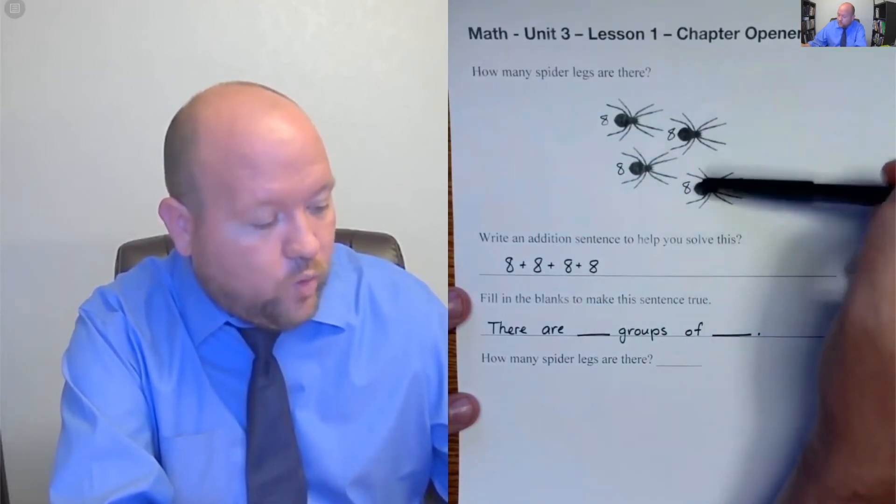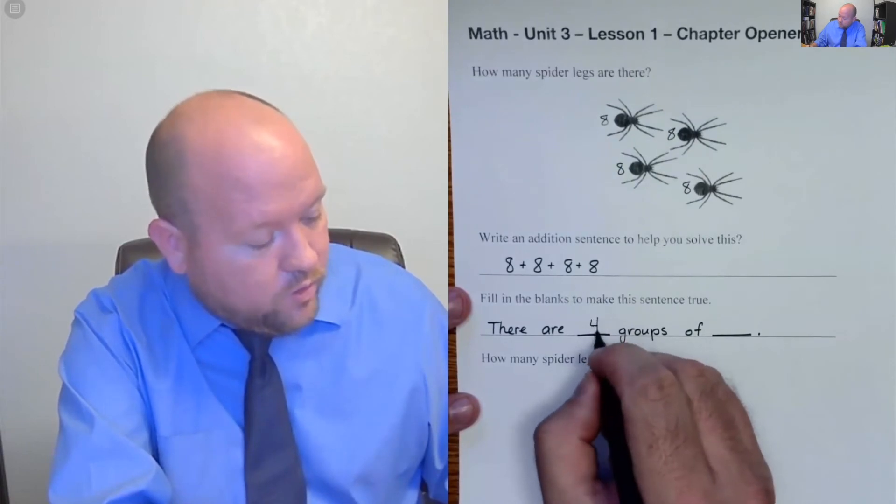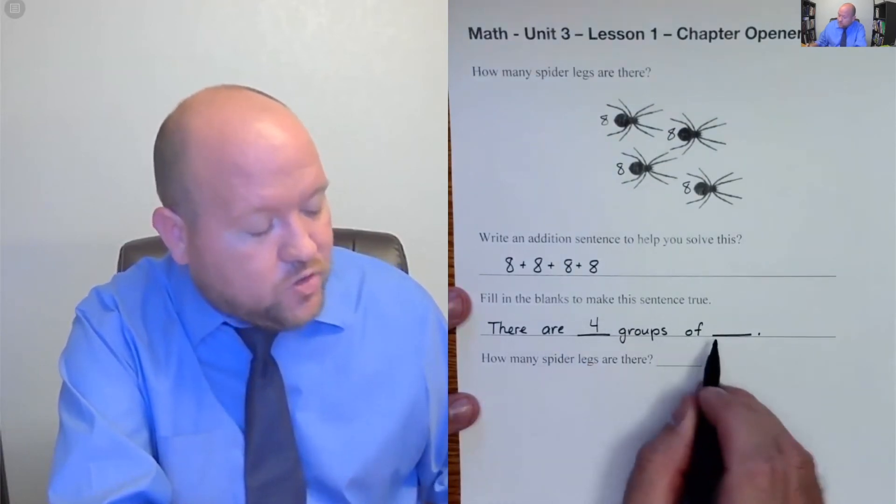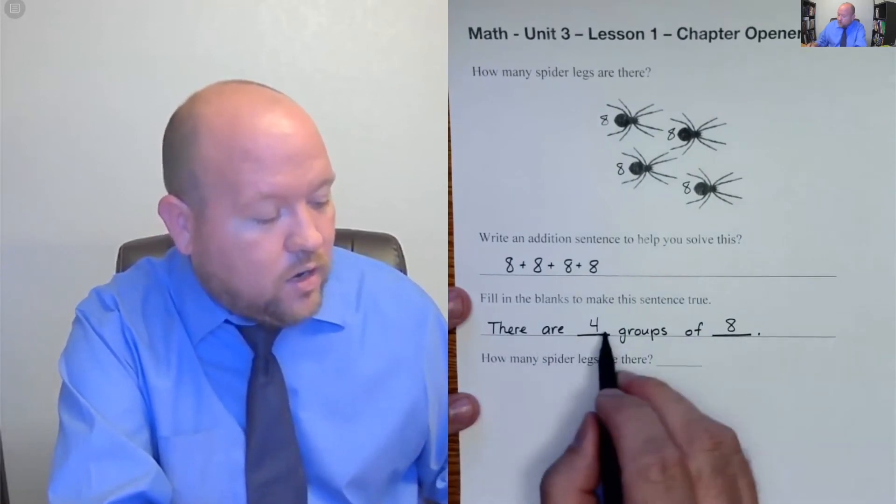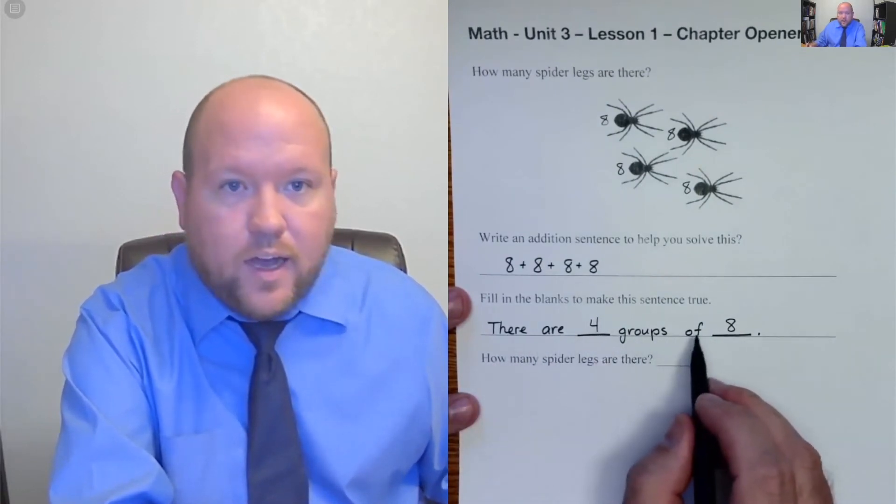One, two, three, four. So there are four groups and each group has how many in it? Each group has eight. So there are four groups of eight.